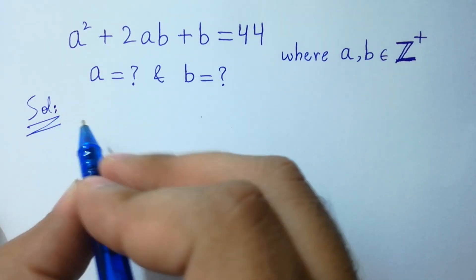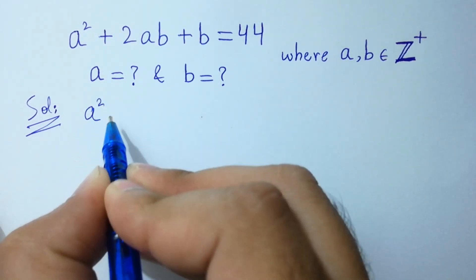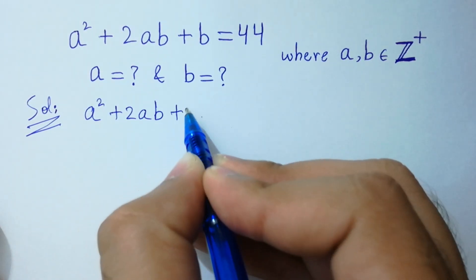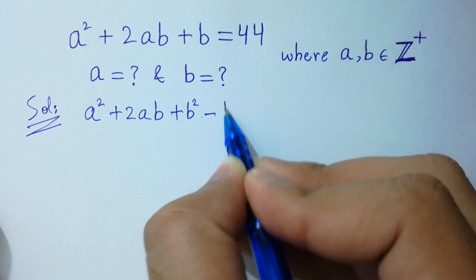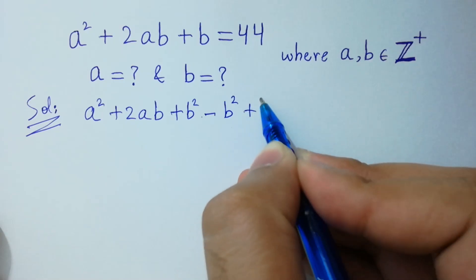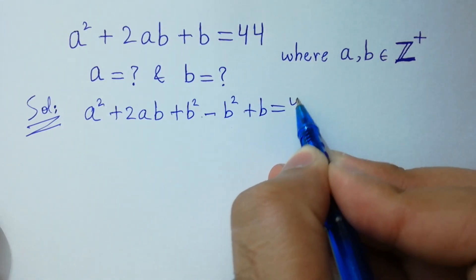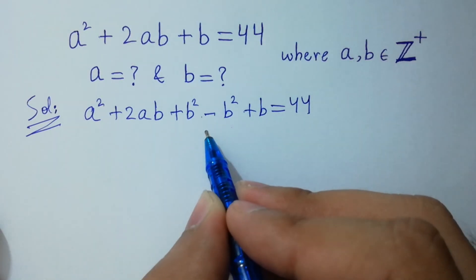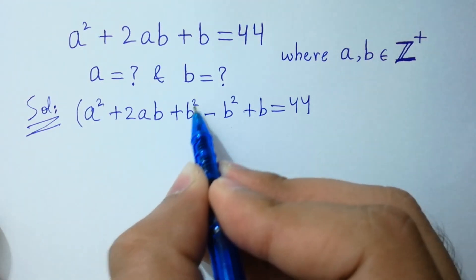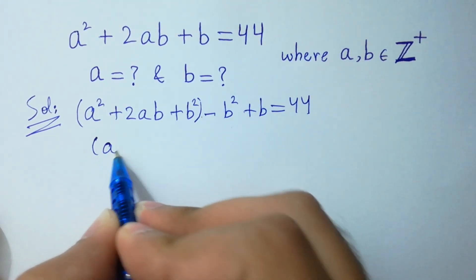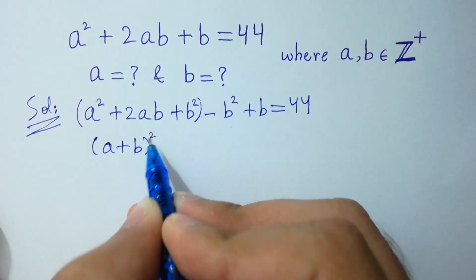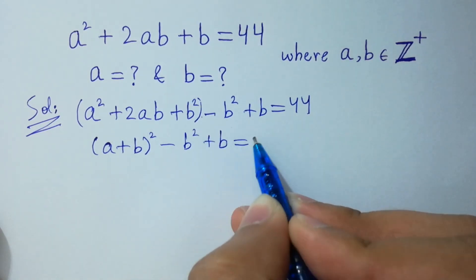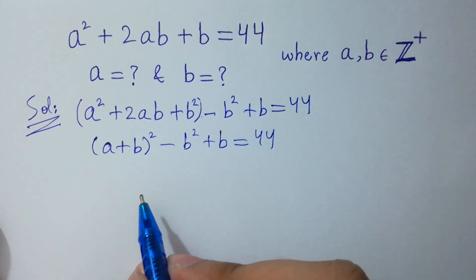It will be equal to a squared plus 2ab plus b squared minus b squared plus b equal to 44. I wrote plus b squared minus b squared to get a plus b whole square minus b squared plus b, as it is equal to 44. I hope you understood.